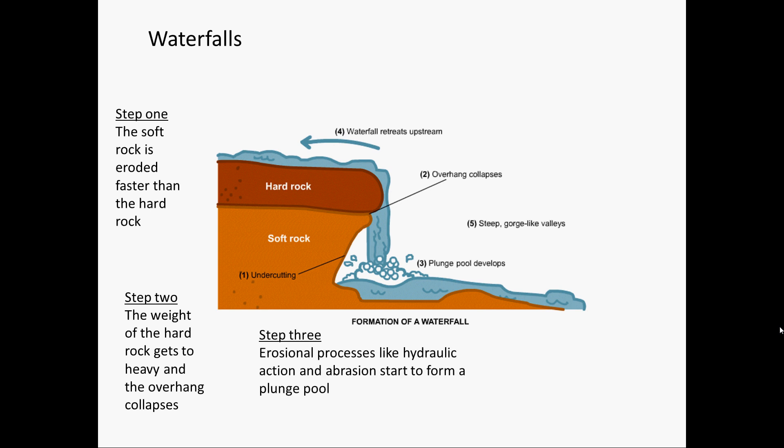Step 3: Erosional processes like hydraulic action and abrasion start to form a plunge pool. Step 4: When the overhang collapses the waterfall retreats up the stream and the process starts again.